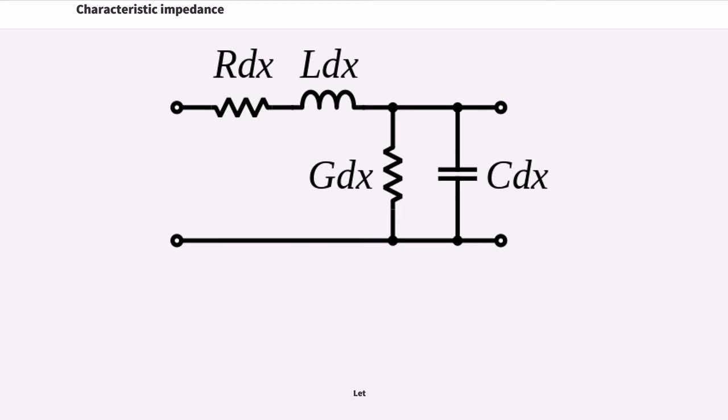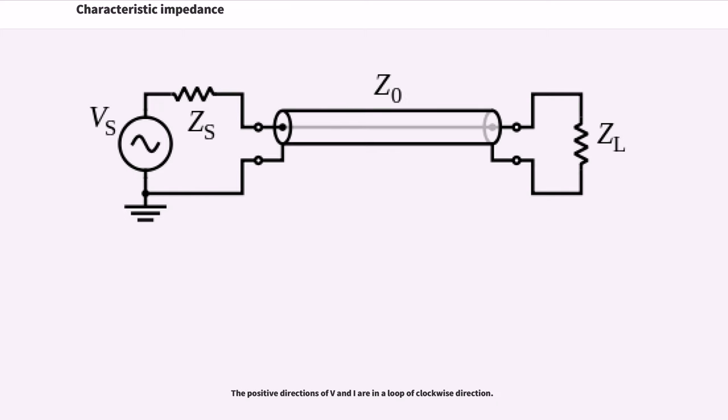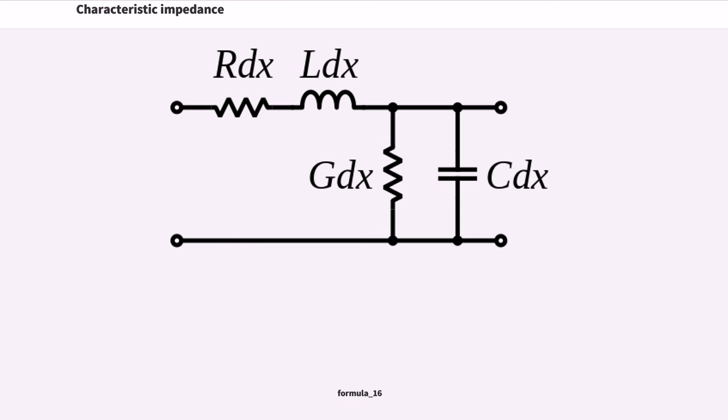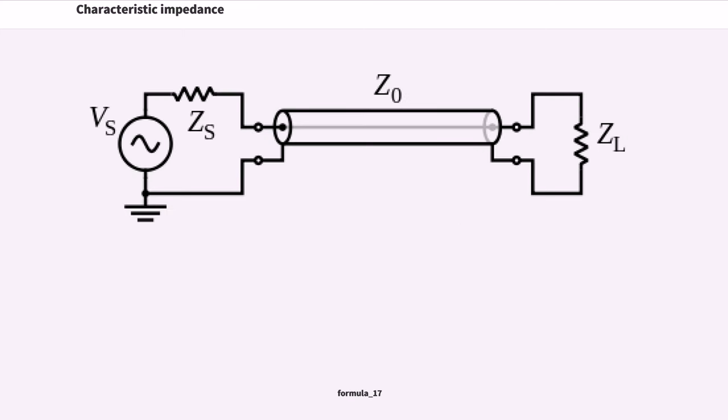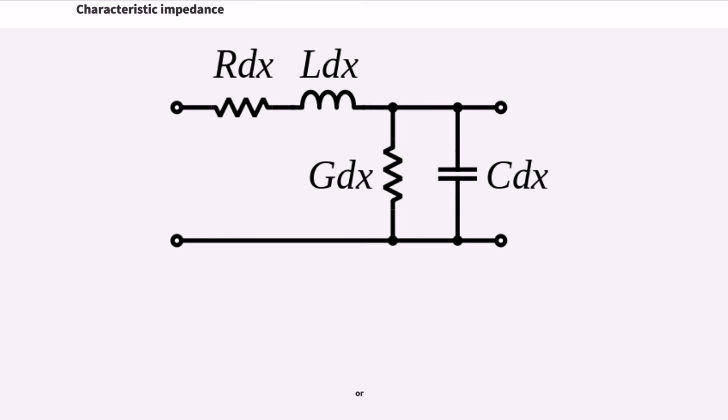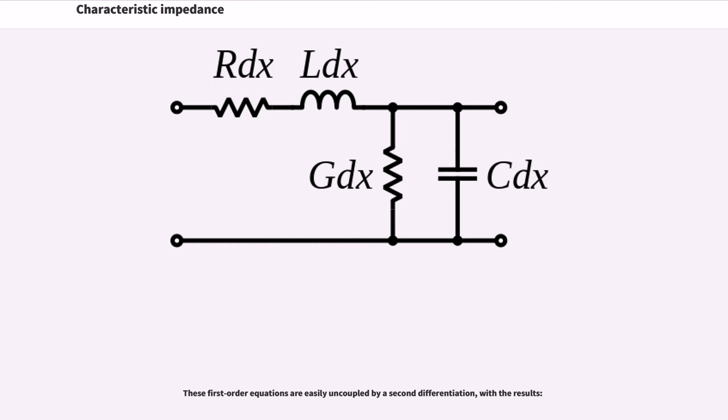Let Formula 14 and Formula 15 be defined. The positive directions of voltage and current are in a loop of clockwise direction. We find Formula 16 and Formula 17, or Formula 18 and Formula 19. These first-order equations are easily uncoupled by a second differentiation, with the results given.